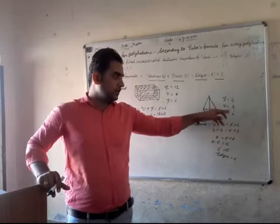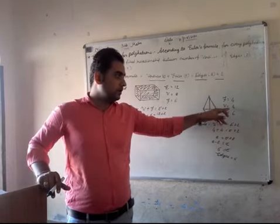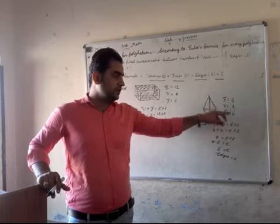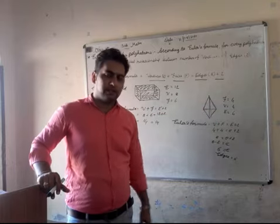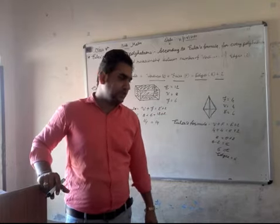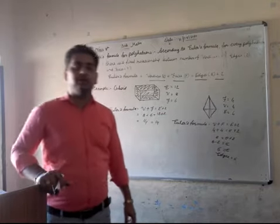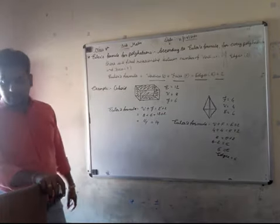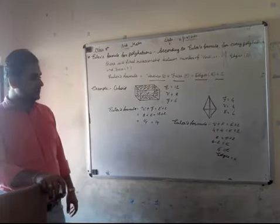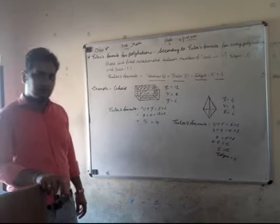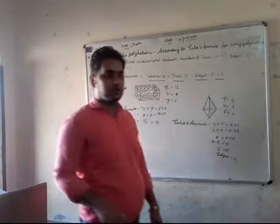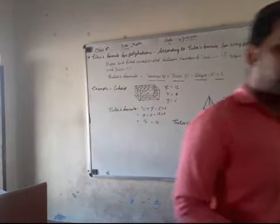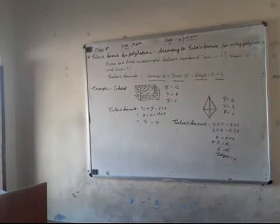So vertex is 4 and faces is 6. We have to verify all the values. There are some questions that I will tell you now.